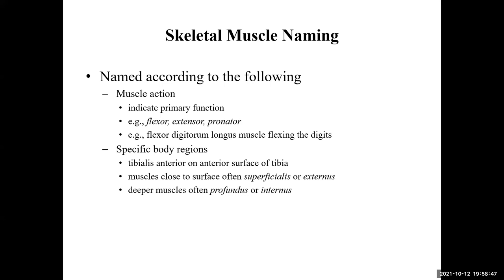Another way we name skeletal muscles is by where we find them — on your arm, back, stomach, or leg. For example, tibialis anterior tells you the muscle is on the front of the tibia. Throwing in terms like superficial, profundus, external, or internus will tell you how close or far from the surface these muscles are — superficialis being closer to the surface, profundus being deeper.